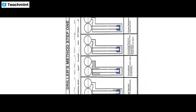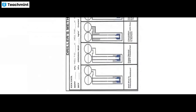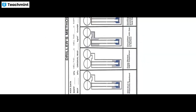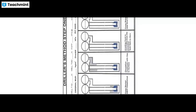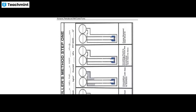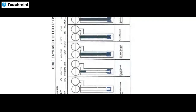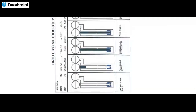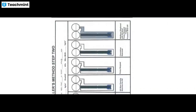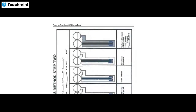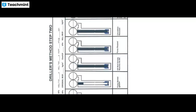For the driller's method step one: the well is shut in and pressure stabilized, then pump is started and RSPP established. Circulation continues with gas to surface, then the invading fluid is circulated from the annulus, the pump is stopped, and the well is shut in. In step two, the pump starts with kill mud density, then pump stop, circulation return, and the wellbore is displaced. These are the key points used in well control engineering.